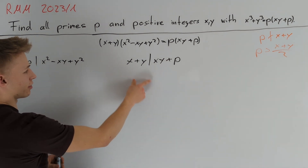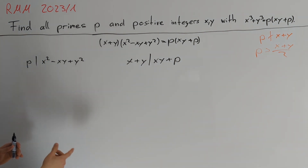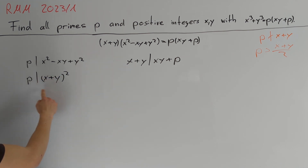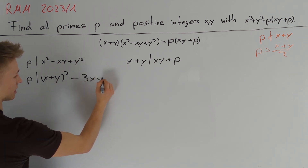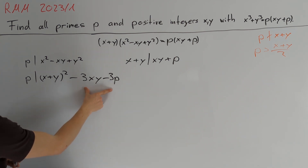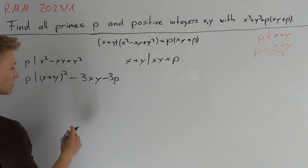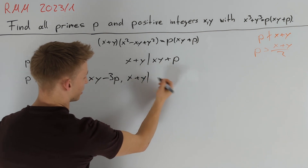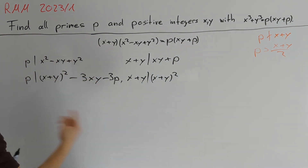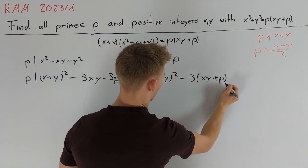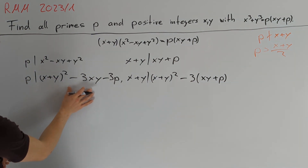Our goal is to combine these divisibility conditions. We note p divides (x + y)² = x² + 2xy + y², so we subtract 3xy, giving p divides (x + y)² - 3xy. We can subtract 3p since it's a multiple of p, leaving minus 3 times the right-hand side of the second condition. Similarly, (x + y) divides (x + y)² minus 3(xy + p).